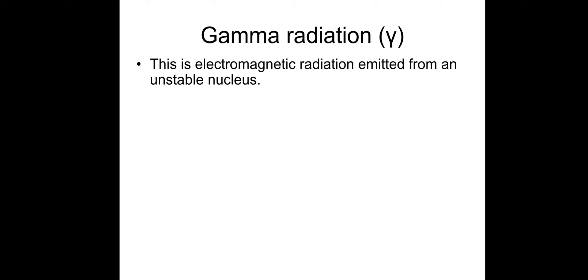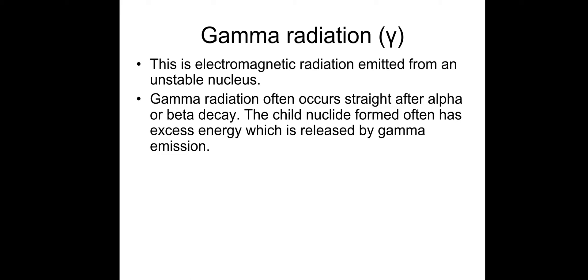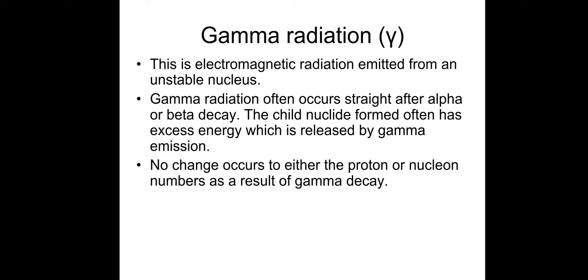It's gamma radiation. So gamma is part of the electromagnetic spectrum. It's electromagnetic radiation emitted from an unstable nucleus. And it often occurs straight after an alpha or beta decay. So the child nuclide that is formed, which is the decay product, often has some excess energy. And that excess energy is released via gamma emission. No change occurs to either the proton or nuclear numbers as a result of the gamma decay. It's just to get rid of excess energy.